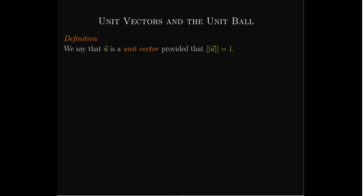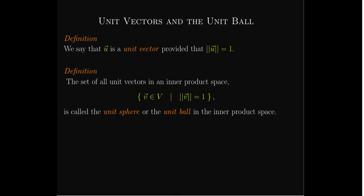Now we can talk about a general unit vector. If the norm of a vector in a general inner product space is 1, we call that a unit vector. The set of all unit vectors in an inner product space is what we call the unit sphere or unit ball.